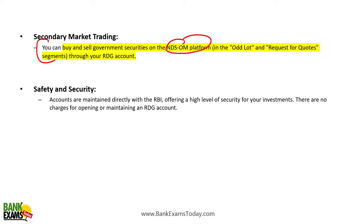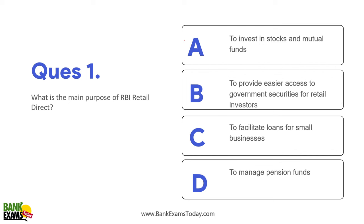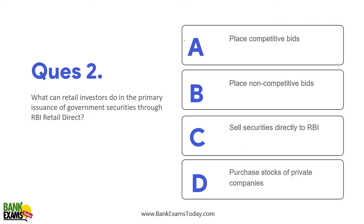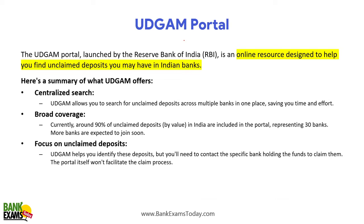In the secondary market, you can buy and sell government securities on the NDS-OM platform in odd lots and request for quotes through your RDG account. There is no maintenance fee for the RDG account. The main purpose of RBI Retail Direct is to provide easier access to government securities for retail investors, who can place non-competitive bids in primary issuances.